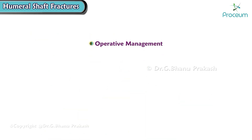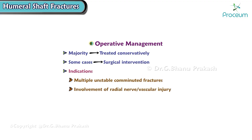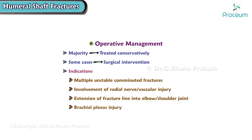While the majority of mid-shaft humerus fractures are treated conservatively, some cases require surgical intervention. Indications for operative management include multiple unstable comminuted fractures, involvement of radial nerve or vascular injury, extension of the fracture line into the elbow or shoulder joint, brachial plexus injury, and failure of conservative management.